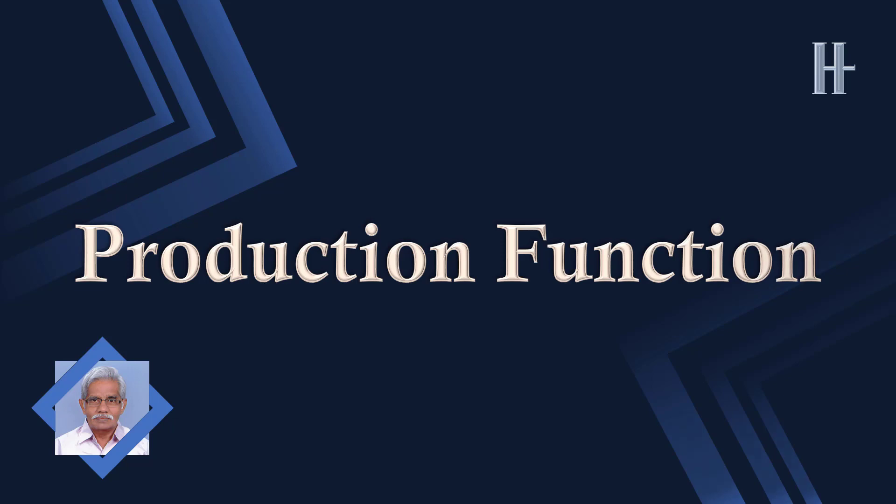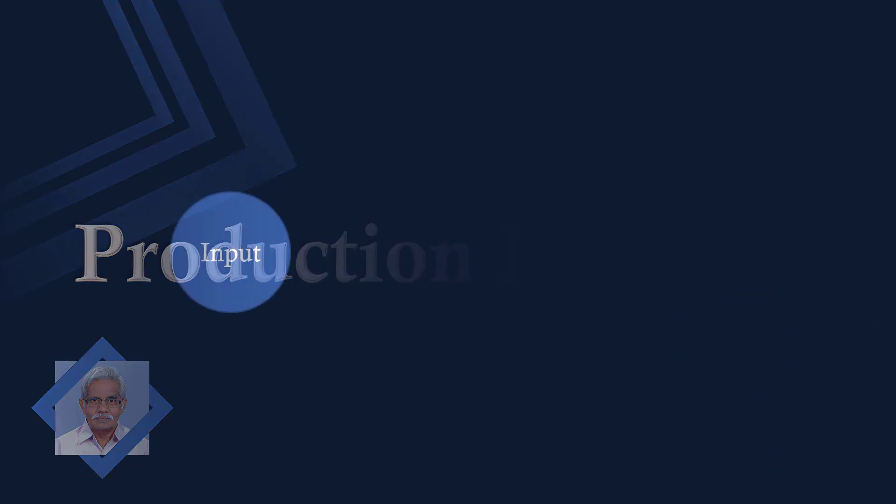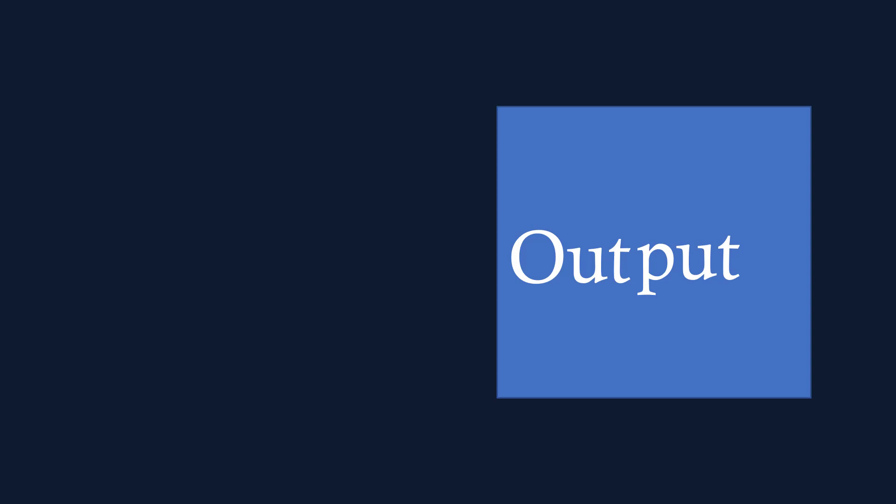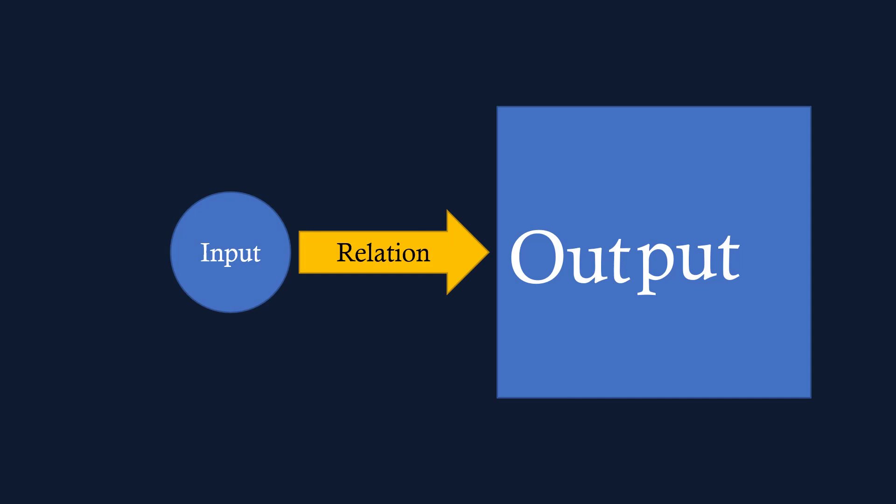Production Function means transforming inputs into output. Output is not possible without inputs. By changing the quantity of inputs, a producer can get the desired level of output. A prudent producer always tries to combine the inputs in such a way that he gets the maximum output. From this, it becomes quite obvious there is a relation between inputs and output.